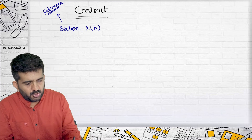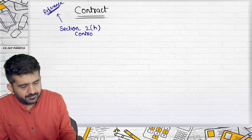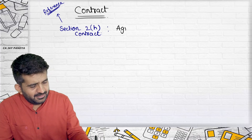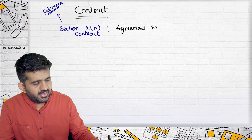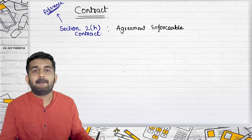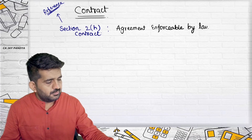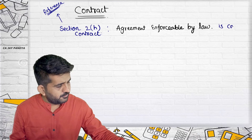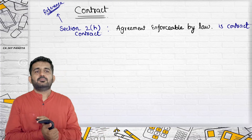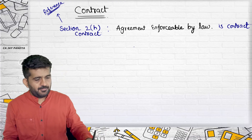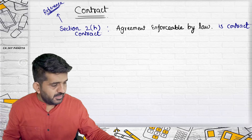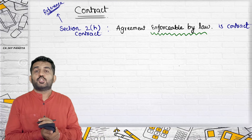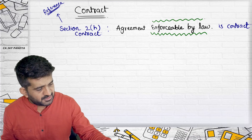Section 2H defines contract as: an agreement enforceable by law. An agreement which is enforceable by law is a contract. We will now understand what is meant by 'agreement' and what is meant by 'enforceable by law' — one portion at a time.